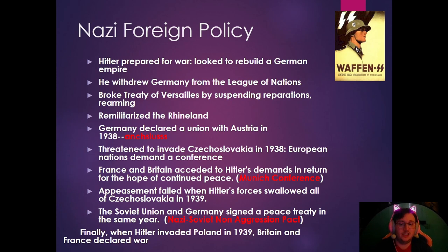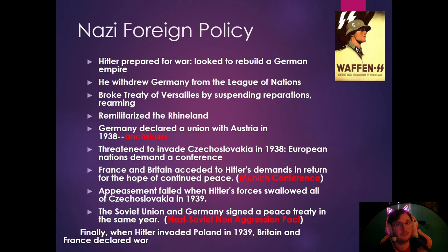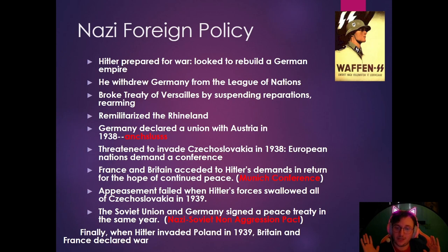In 1939, Hitler came in and took over Czechoslovakia. Then he teamed up with the USSR. They signed a non-aggression pact agreeing not to fight each other and to take over Poland and split it in half. Hitler staged a false flag — dressing Jewish men from concentration camps as Polish soldiers to blow up a border building and blame Poland. Germany invaded Poland in 1939, and Britain and France declared war. That was the start of World War II.